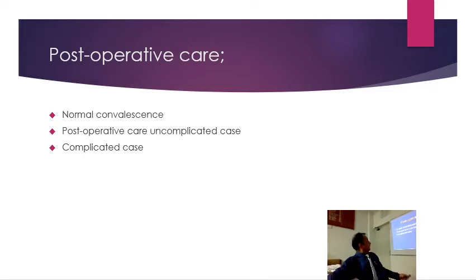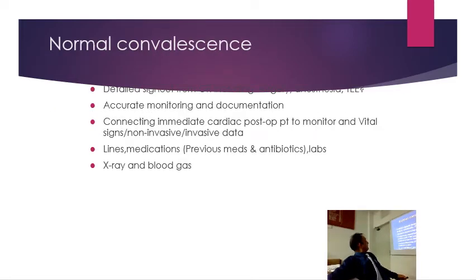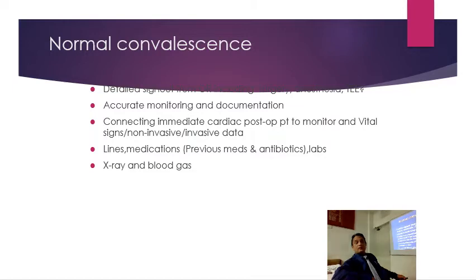Once the patient comes to the cardiac ICU or pediatric ICU, you need to take a detailed sign-out from the operation center — including what surgery has been done, anesthesia notes, how much blood products and volume were given, any particular anesthesia issues, whether the patient had hypertension, whether large volumes or inotropes were given, and especially whether the patient was bleeding in the OR, as bleeding is a very important issue in immediate post-op cardiac ICU care.